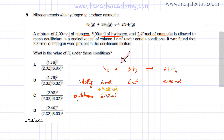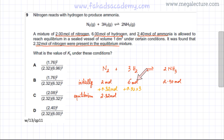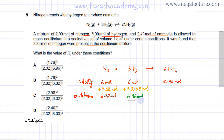If 0.32 extra moles of N₂ were produced, using the 1:3 ratio from the equation, the moles of H₂ also produced are 0.32 × 3 = 0.96 moles. So the equilibrium moles of H₂ are 6 + 0.96 = 6.96 moles.